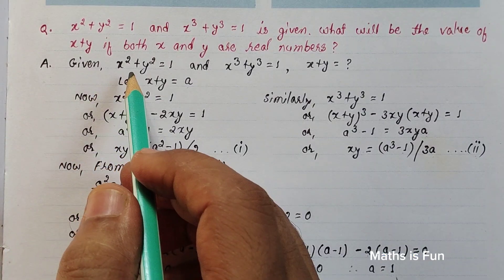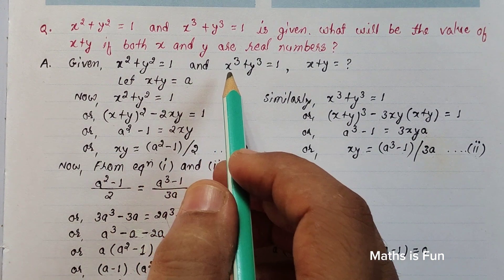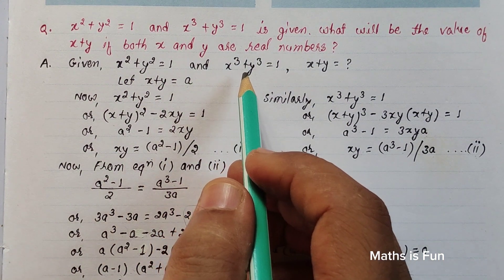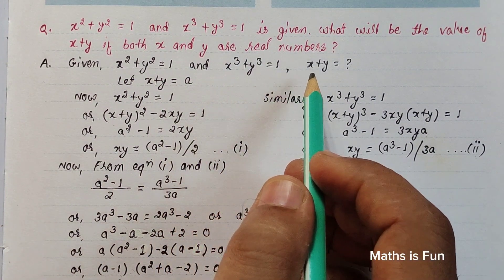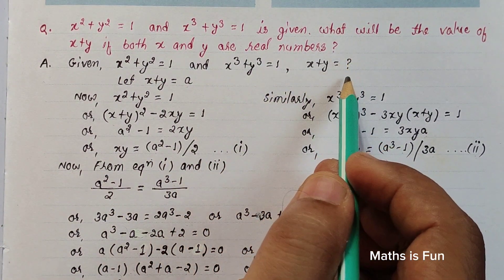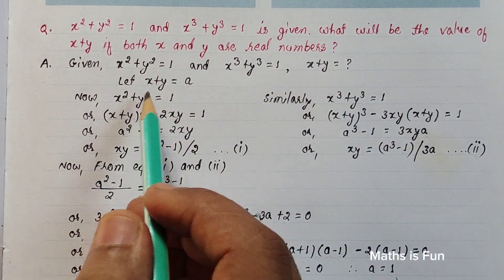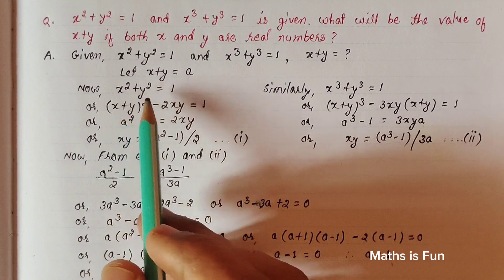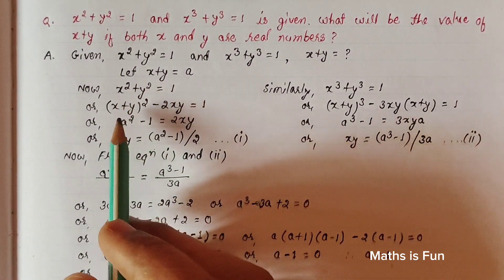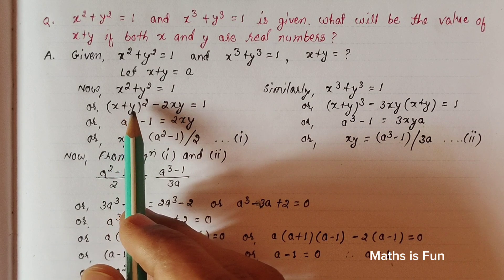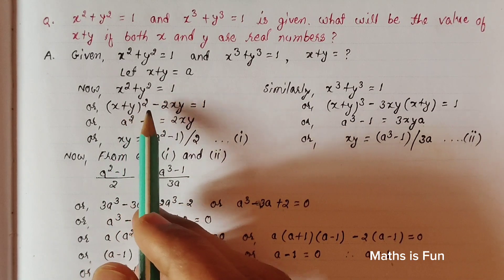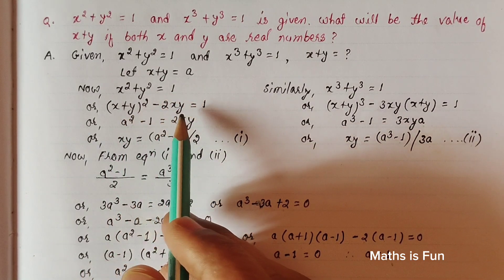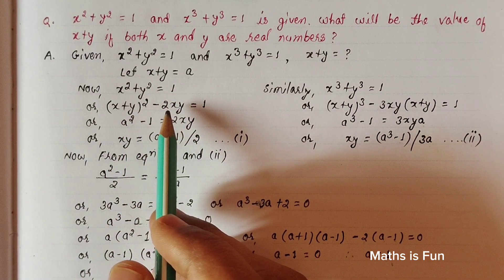It is given that x² + y² = 1 and x³ + y³ = 1. We want x + y, so let x + y = a. Taking our first equation, x² + y² = 1, this can be written as (x + y)² - 2xy = 1.